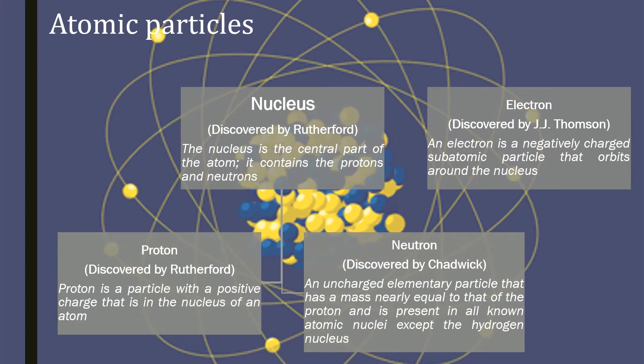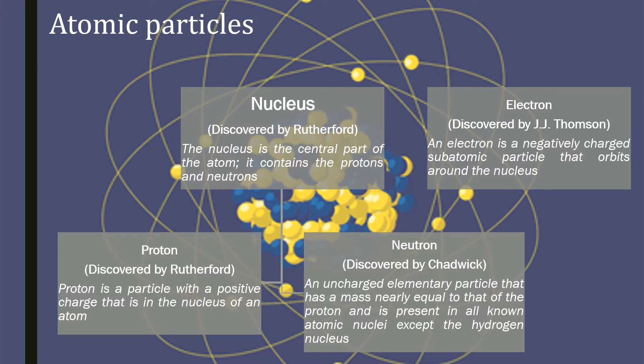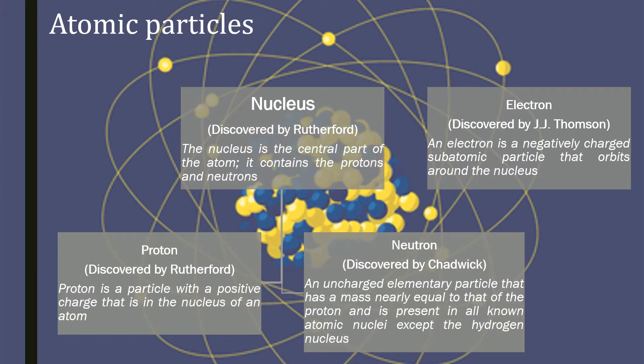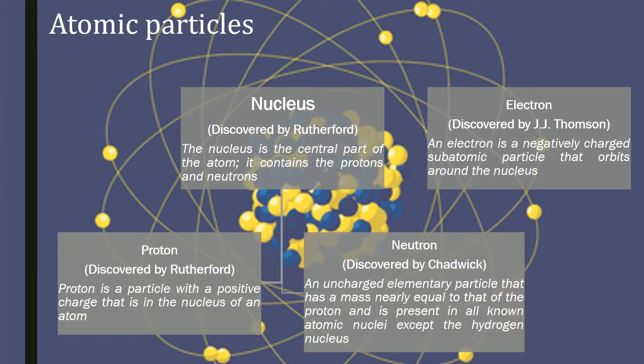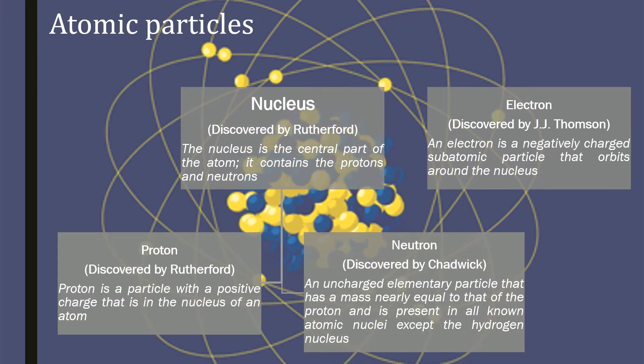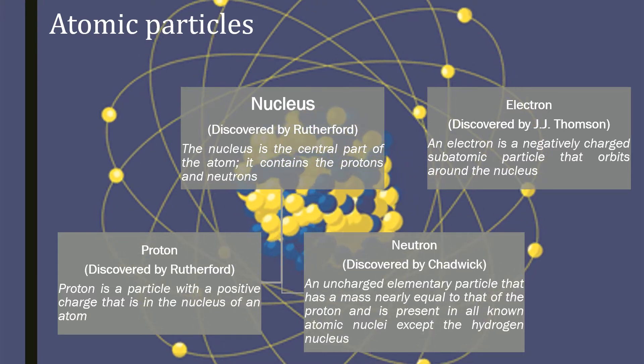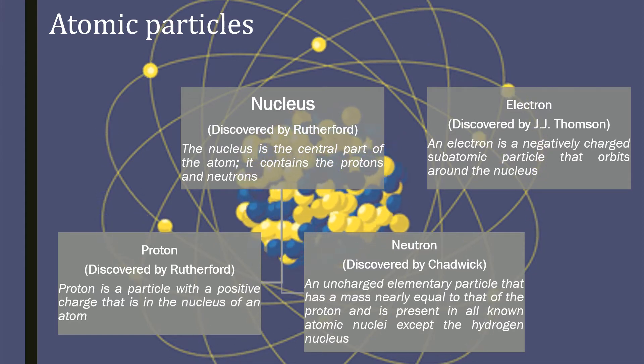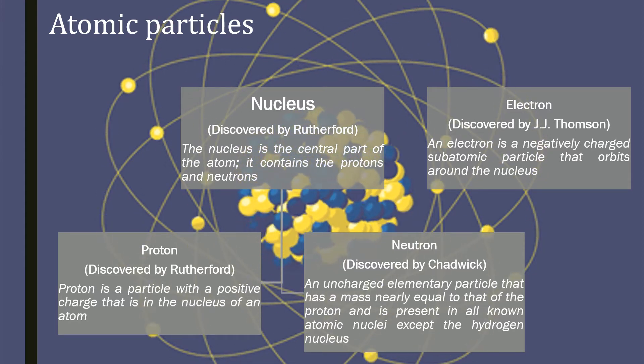An electron is a negatively charged subatomic particle that orbits around the nucleus. Now let us learn a little more about the atom.